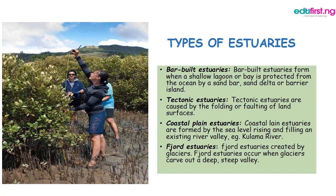We have the bar-built estuaries, the tectonic estuaries, the coastal plain estuaries, and the fjord estuaries. Bar-built estuaries form when a shallow lagoon or bay is protected from the ocean by a sand bar, sound delta, or barrier island. Tectonic estuaries are caused by the flooding or faulting of land surfaces.